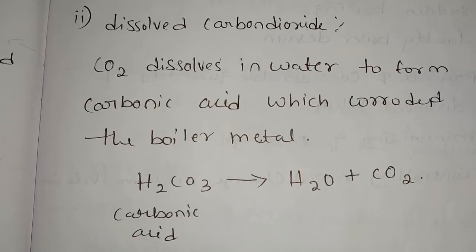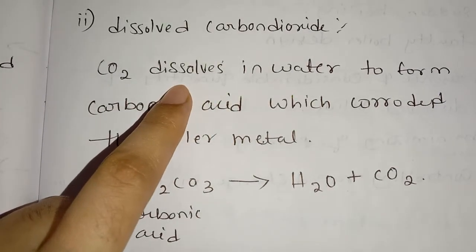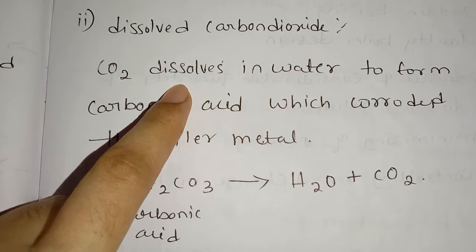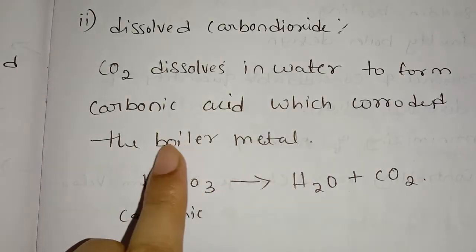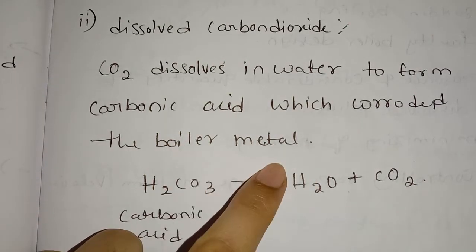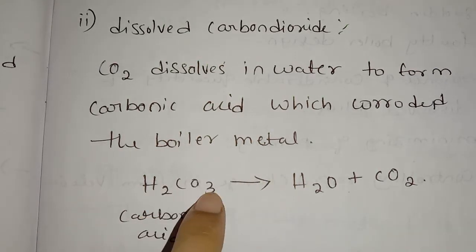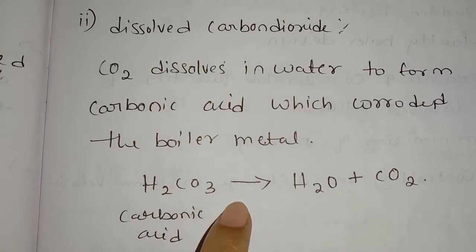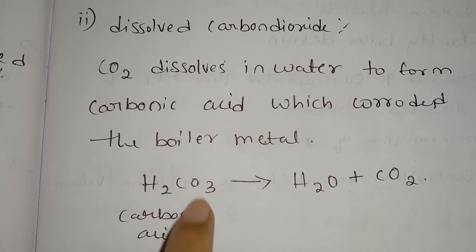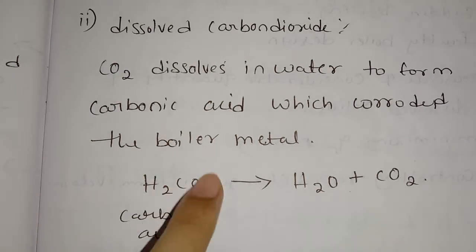Dissolved Carbon Dioxide: CO₂ is dissolved in water to form carbonic acid, which corrodes the boiler metal. Corroded metal is boiler corrosion. H₂CO₃ (carbonic acid) reacts and causes a corrosion reaction.